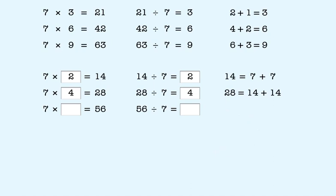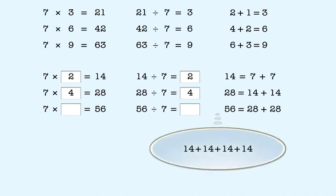56 is double 28, so we divide by 2 and get 28. 28 is double 14, and each 14 is double 7. We have 8 sevens, so the missing factor is 8. That means 56 divided by 7 is 8.